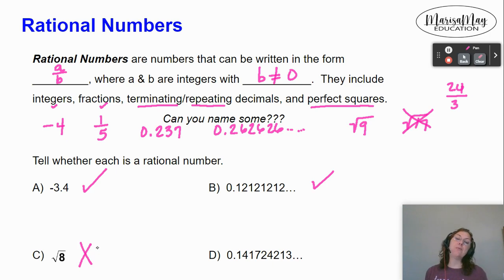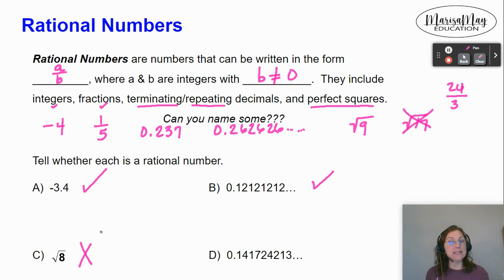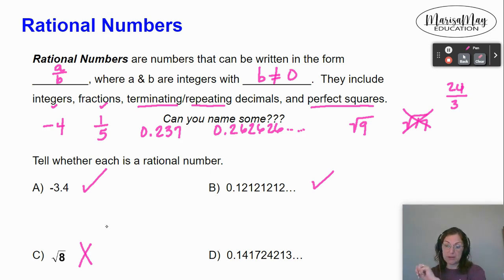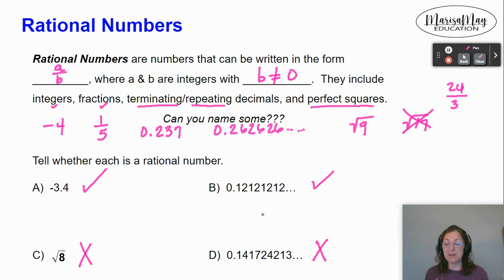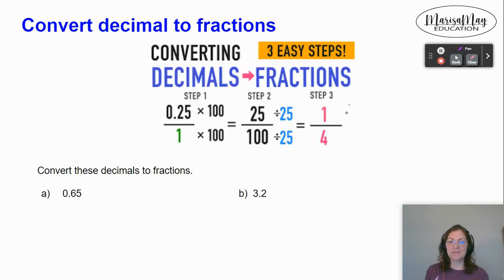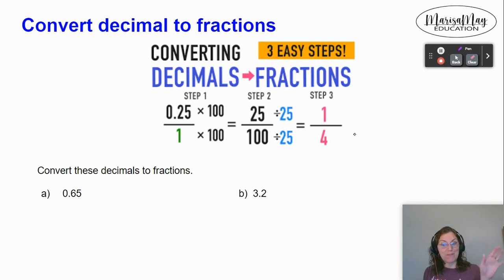Square root of 8 — that's not a perfect square, so that's a no, it is not a rational number. And 0.14172421213 and keeps going — that's not repeating. Notice in B how the 1212 repeated; in this one it doesn't repeat, so this is not a rational number; it cannot be written as a fraction. Next, let's take a look at converting from a decimal to a fraction.